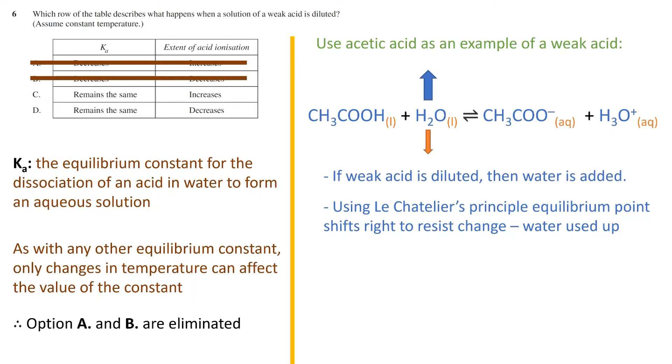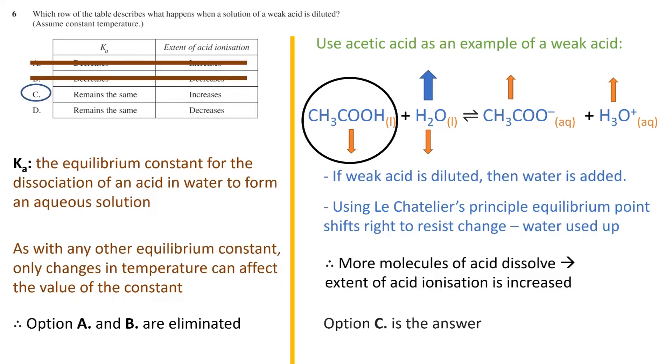However, not only will this have an effect on the concentration of the water, but also the other reactants and products. In this question, we are interested in the acetic acid molecule. What happens to that? Well, as we can see, the concentration has gone down, while the concentration of the ions has gone up. That is, the extent of the acid ionization has increased. More ions are produced from the acid molecules. Therefore, option C is the answer.